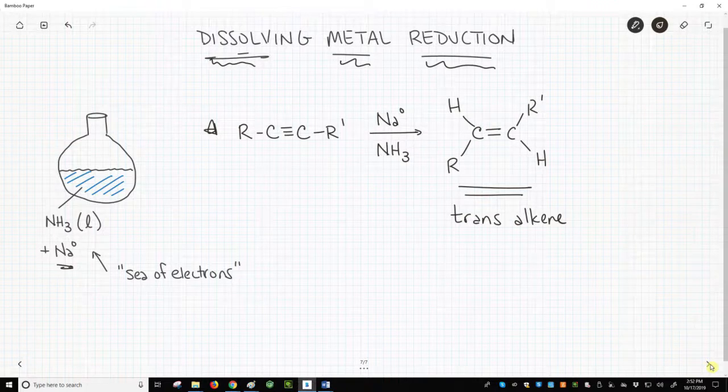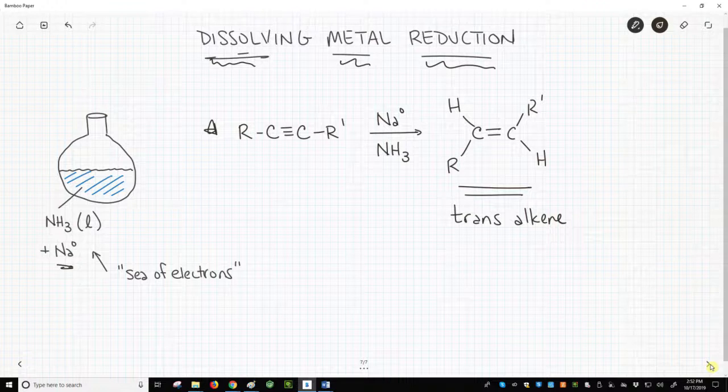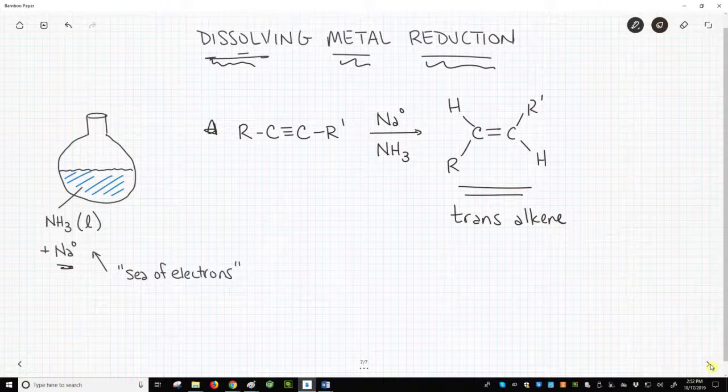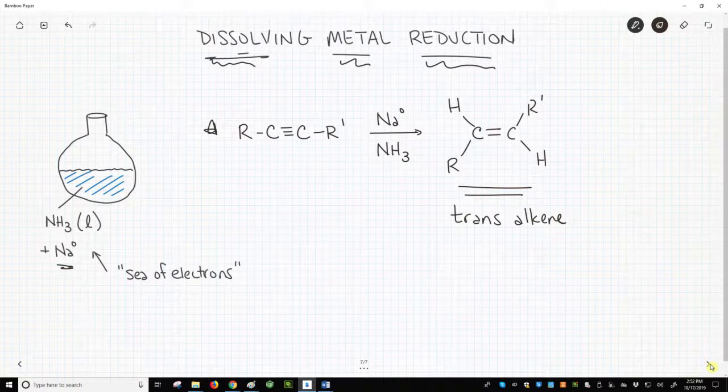So when it comes to alkynes, we can reduce the triple bond all the way to the alkane. We can also stop at the alkene and can control whether the alkene is cis or trans. We have a lot of options when we add hydrogen across an alkyne.